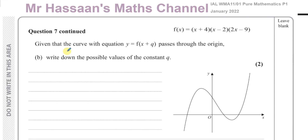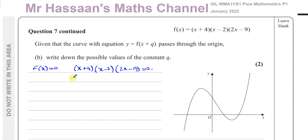Now for part B. It says: given that the curve with equation y equals f(x+q) passes through the origin, write down the possible values of the constant q. The easiest way to think about this is in terms of transformations. Setting f(x)=0 gives the x-intercepts, which occur when x+4=0, or x-2=0, or 2x-9=0. So our three x-intercepts are x=-4, x=2, and x=4.5.